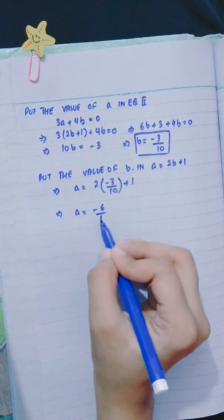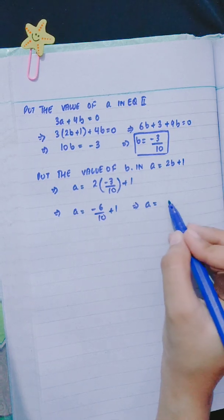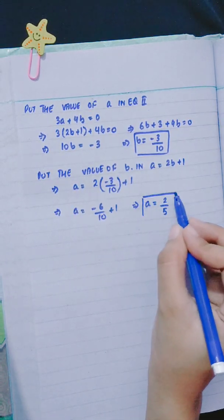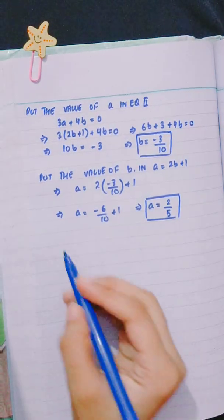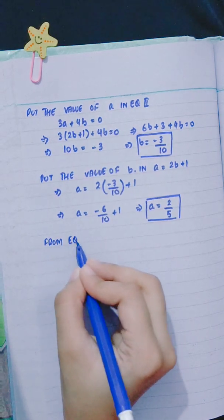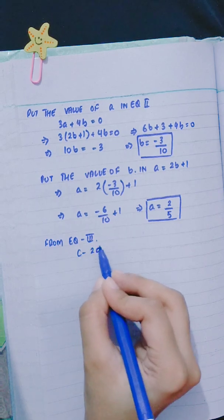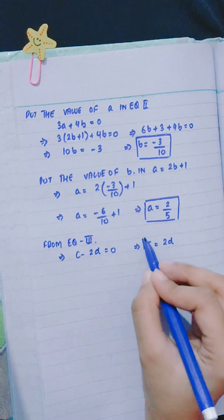From equation number 3: c - 2d = 0, so c = 2d.